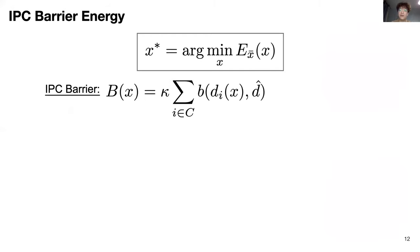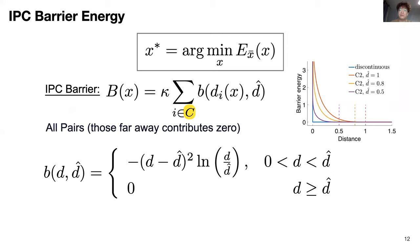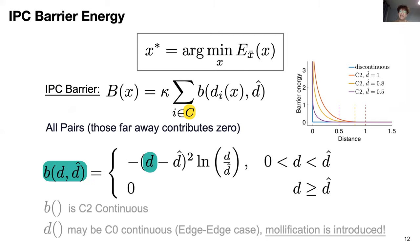To ensure non-overlap, we add the recently developed incremental potential contact IPC barrier energy to our minimization objective. The barrier exerts a large repulsion between all pairs of surface primitives that diverges as these pairs become closer. In turn, the barrier is smoothly clamped at a user-specified threshold to ensure continuity for both its gradient and Hessian. This being said, the barrier can both be efficiently evaluated and effectively optimized with higher-order gradient-based descent with projected Newton.